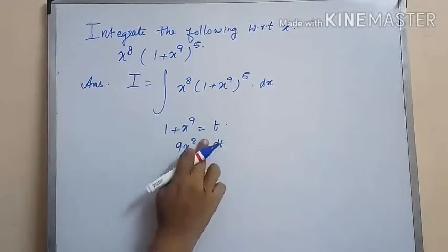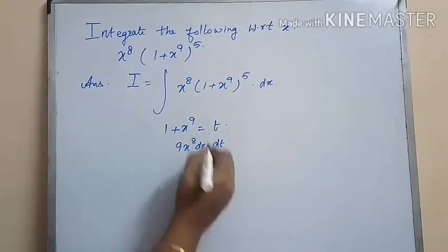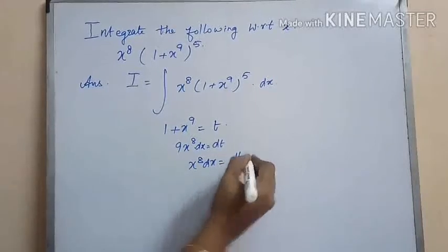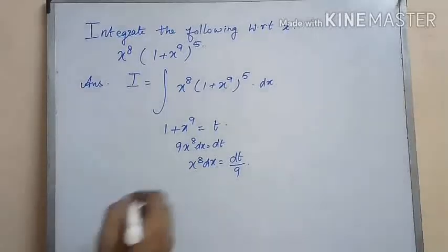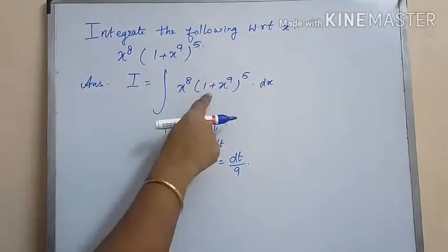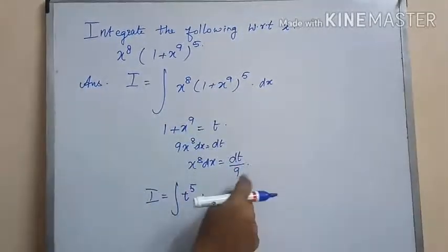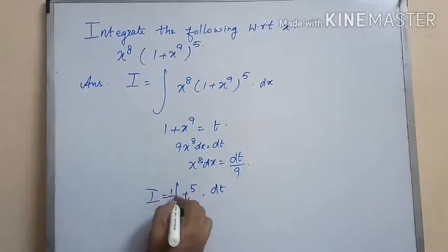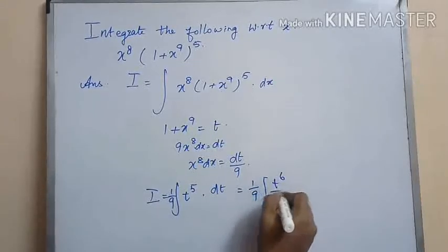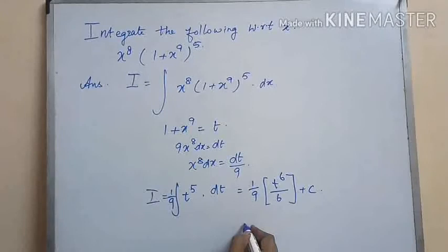We will use integration by substitution method. Here we substitute t equal to 1 plus x to the power of 9, so we get dt as 9 x to the power of 8 into dx, meaning dt by 9 equals x to the power of 8 into dx. Substituting these values in I, we get the integral of t to the power of 5 into dt by 9. Taking 1 by 9 outside and integrating t to the power of 5, we get t to the power of 6 by 6 plus c.